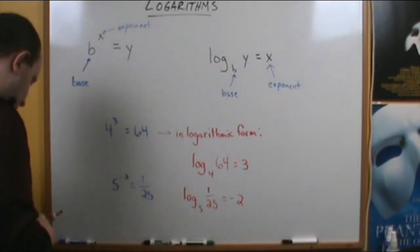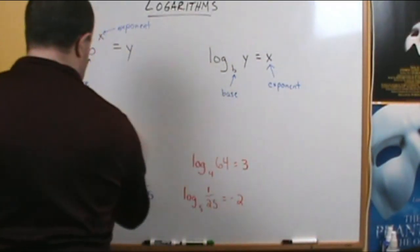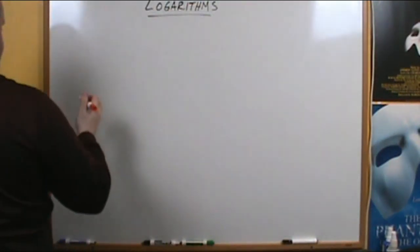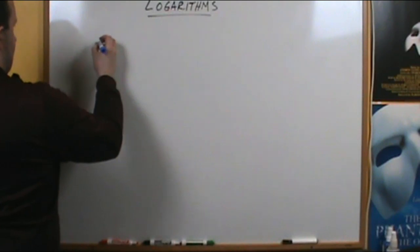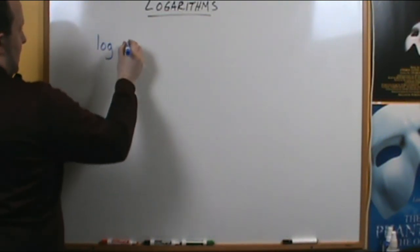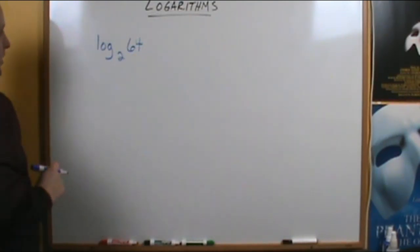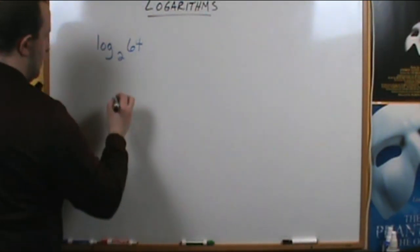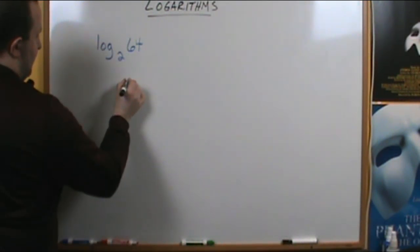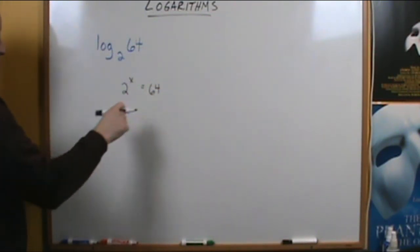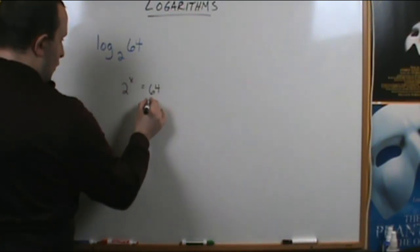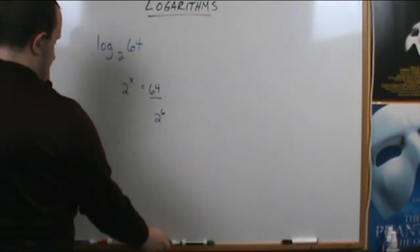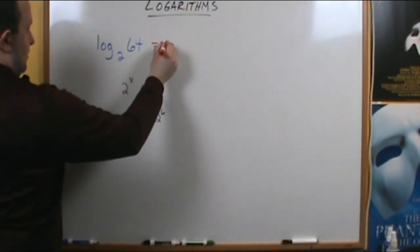Let's talk about evaluating some logarithms. If we have a log with a base of 2 of 64, what we have to think about is: 2 raised to what power gives us 64? It turns out 64 is a power of 2 — 64 is really 2 to the 6th. So 2 to the 6th power is 64, meaning the log base 2 of 64 is 6.